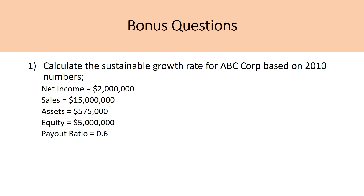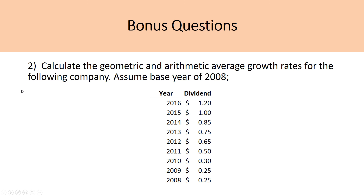For today, we're going to be considering two bonus questions. The first question looks at the sustainable growth rate — calculate the sustainable growth rate for ABC Corp based on 2010 numbers; all you have to do is calculate the return on equity and then input that into the formula. For question two, calculate the geometric and arithmetic average growth rates for the following company, assuming a base year of 2008 — remember, 2008 is not included as one of the periods. Please comment and share your answers below. If you have any questions, I'll be sure to reply. Please like and subscribe — thank you and have a good day!